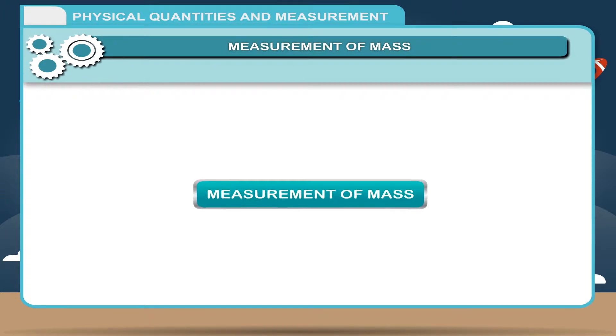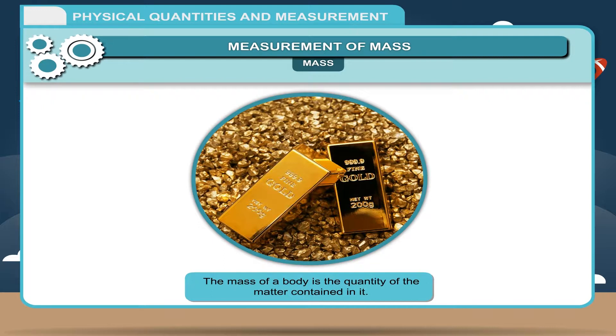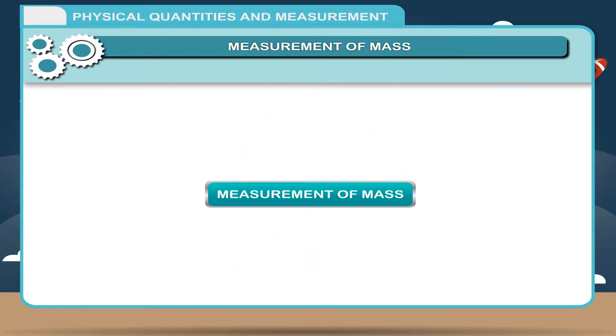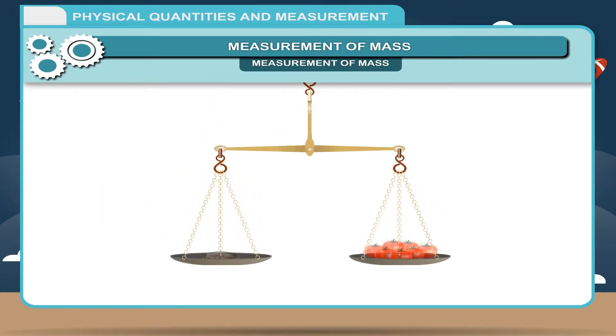Measurement of Mass. The mass of a body is the quantity of matter contained in it. When we purchase tomatoes from the market, the vendor measures the mass of tomatoes by a balance.